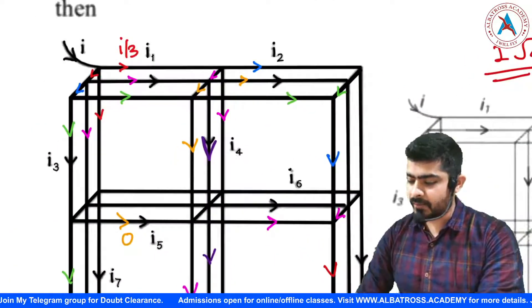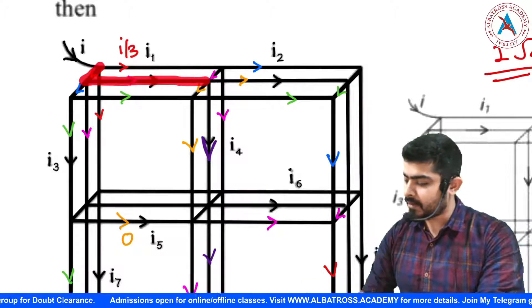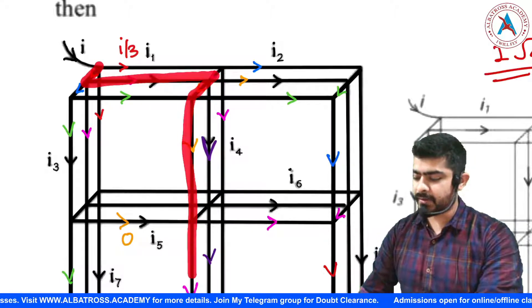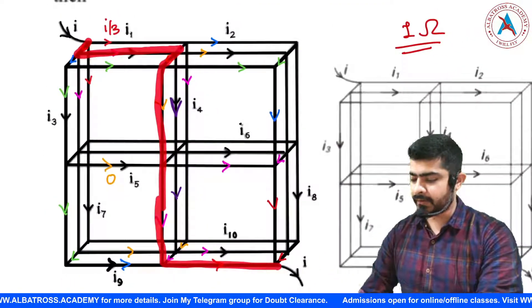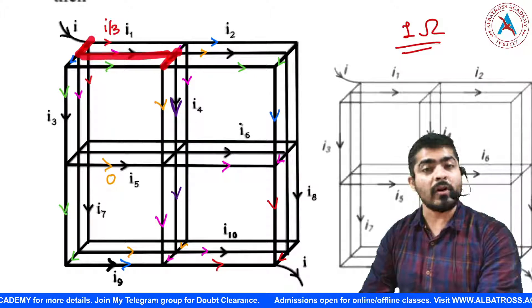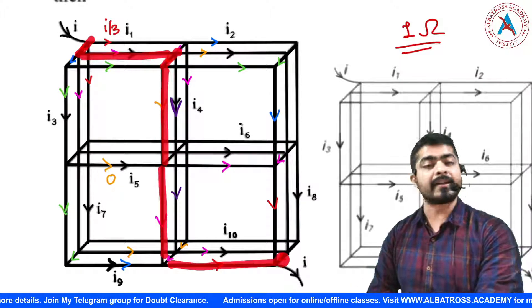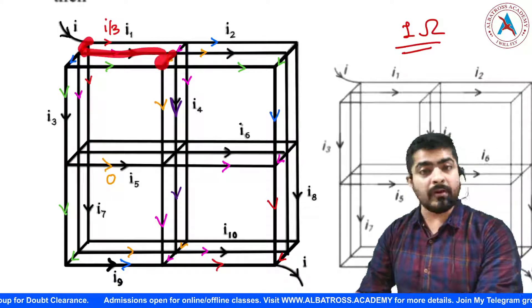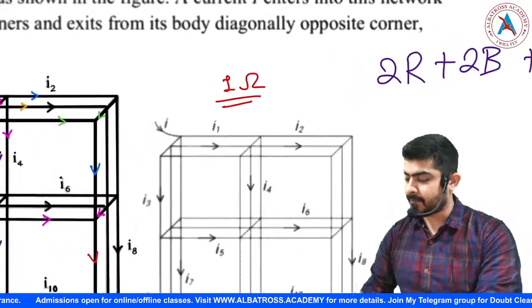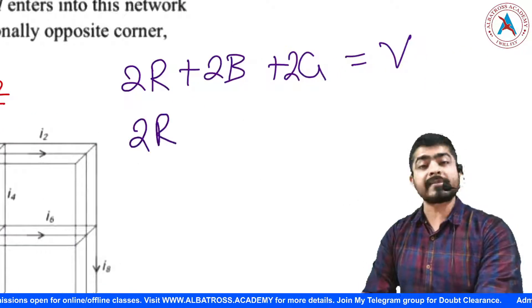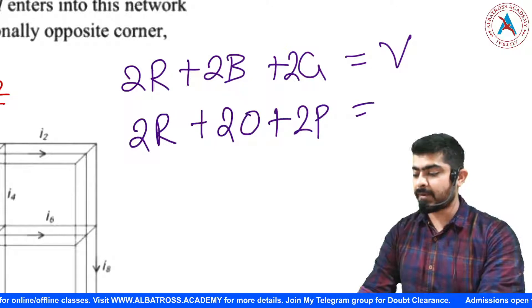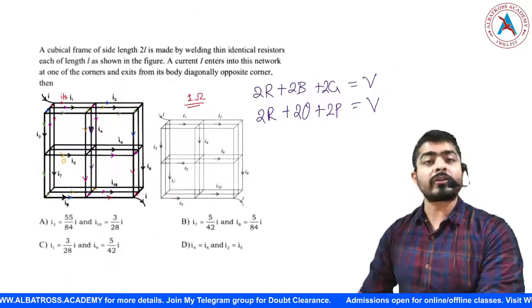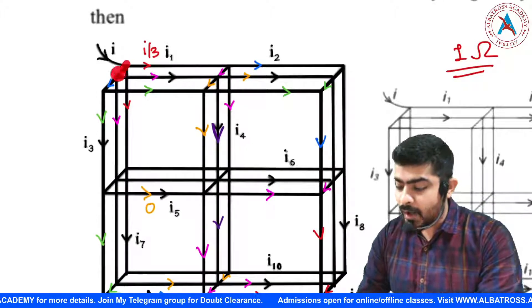Following a second path through red, pink, orange, orange, pink, red gives: 2×red + 2×pink + 2×orange = V. This is my second equation.